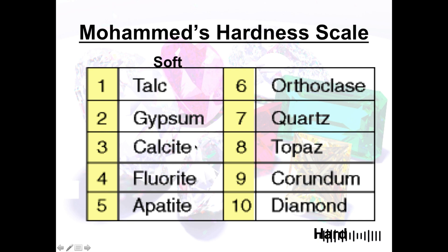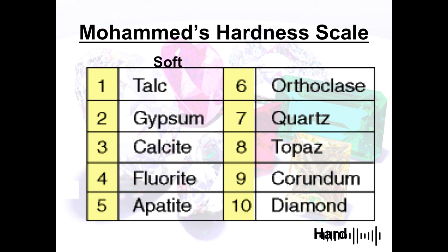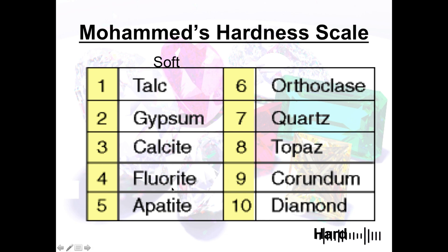Next is calcite, rated 3 on the Mohs scale. Calcite is a carbonate mineral containing calcium, carbon, and oxygen.